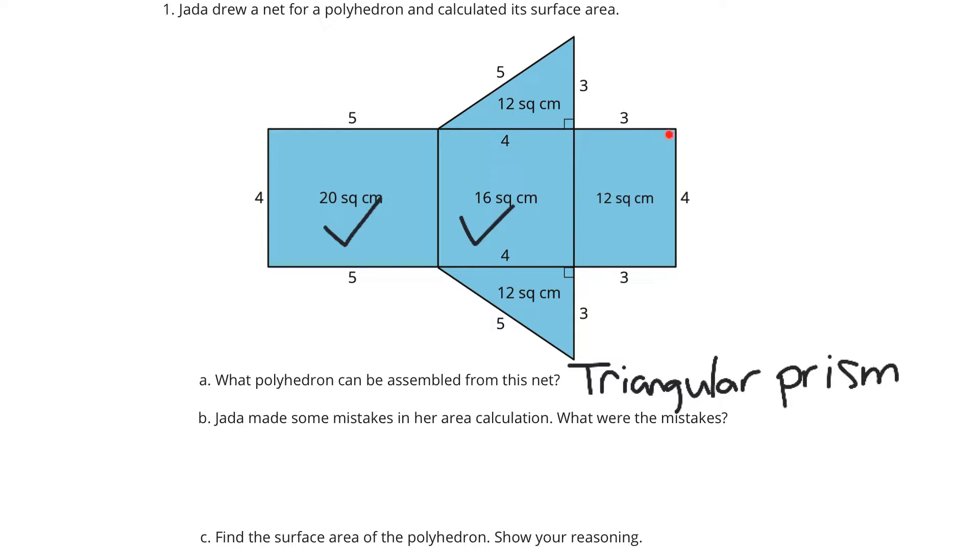This rectangle here is 3 by 4, and 3 times 4 is 12, so that's okay. So our rectangles look to be good, which probably means our triangles are not.